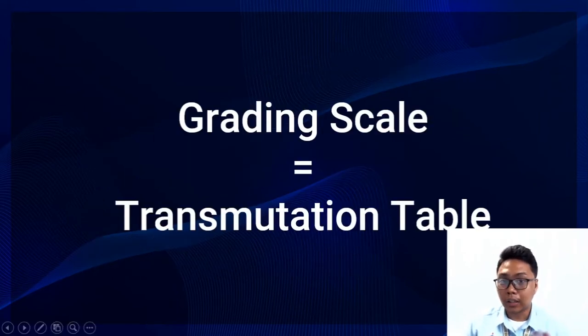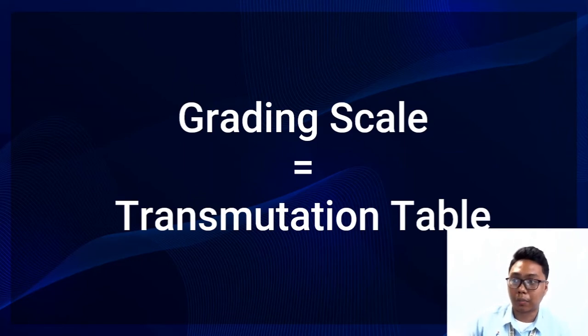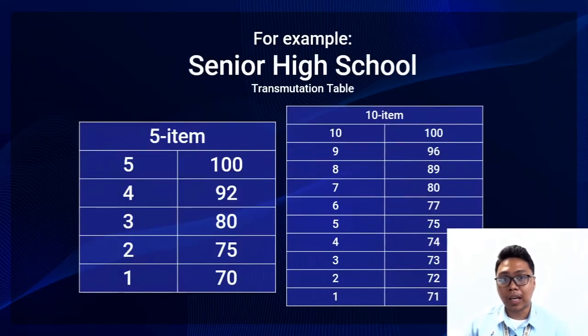In FCPC terminology, the grading scale is known as our Transmutation Table. In the FCPC, we have, for example, a Senior High School Transmutation Table.